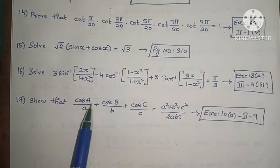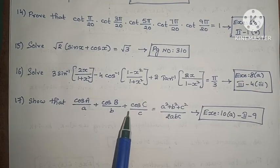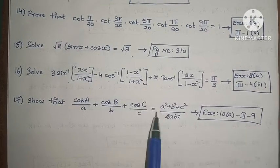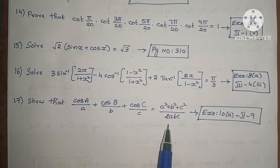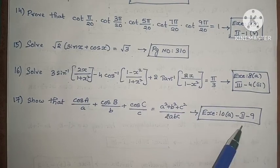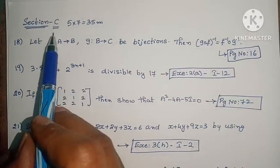Next, show that cos A by small a plus cos B by small b plus cos C by small c equals a squared plus b squared plus c squared by 2abc. Exercise 10, Second Roman, Ninth one. Next, Section B is complete.